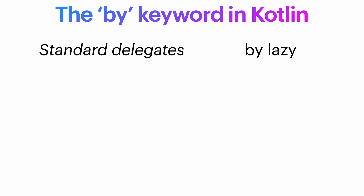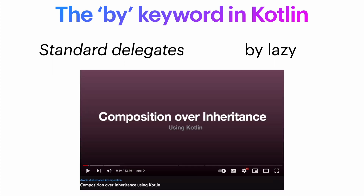It uses the BY keyword to delegate the read and write of your property to the lazy delegate. Also, if you've been following this channel, you might remember the BY keyword from the video on composition over inheritance, which showed a way to delegate the implementation of an interface to another object — one of the strongest Kotlin tools you can use to write cleaner code.